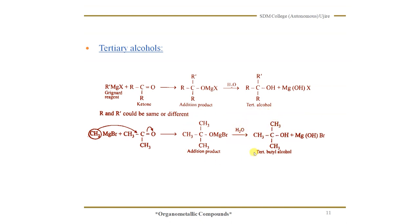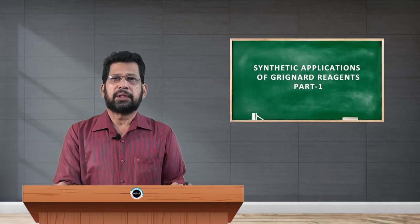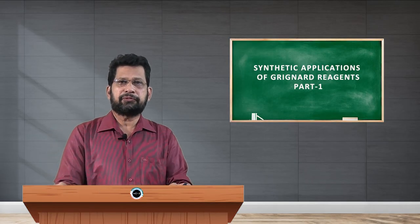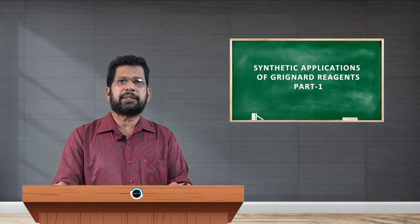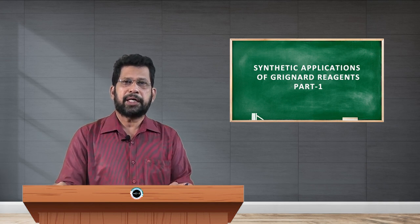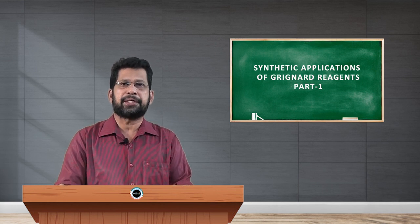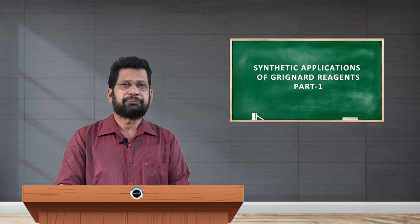This is the general formula of tertiary butyl alcohol. With this, we have studied the preparation of all three types of alcohols — primary, secondary, and tertiary. Let me explain the remaining aspects of Grignard reagent in my next session. Thank you.